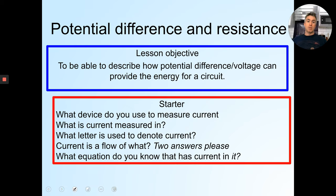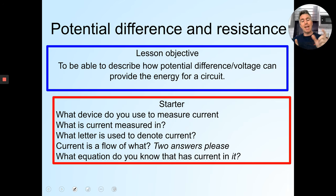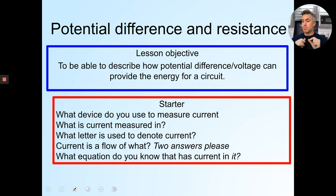What device do you use to measure current? You use an ammeter — A-M-M-E-T-E-R. The ammeter is the device you use to measure current. It measures current in amps or amperes. What letter do you use to denote current? It's tricky — if you're writing about current in an equation, you use the letter I. A is for what it's measured in (amps), but you use the letter I.